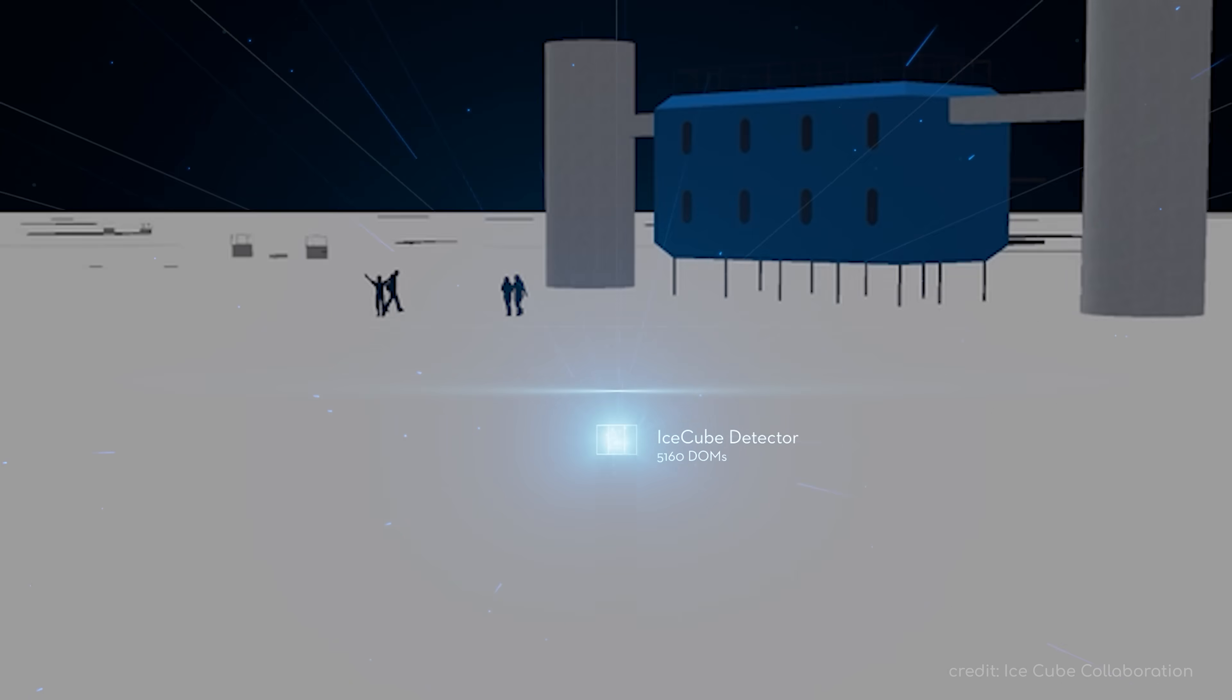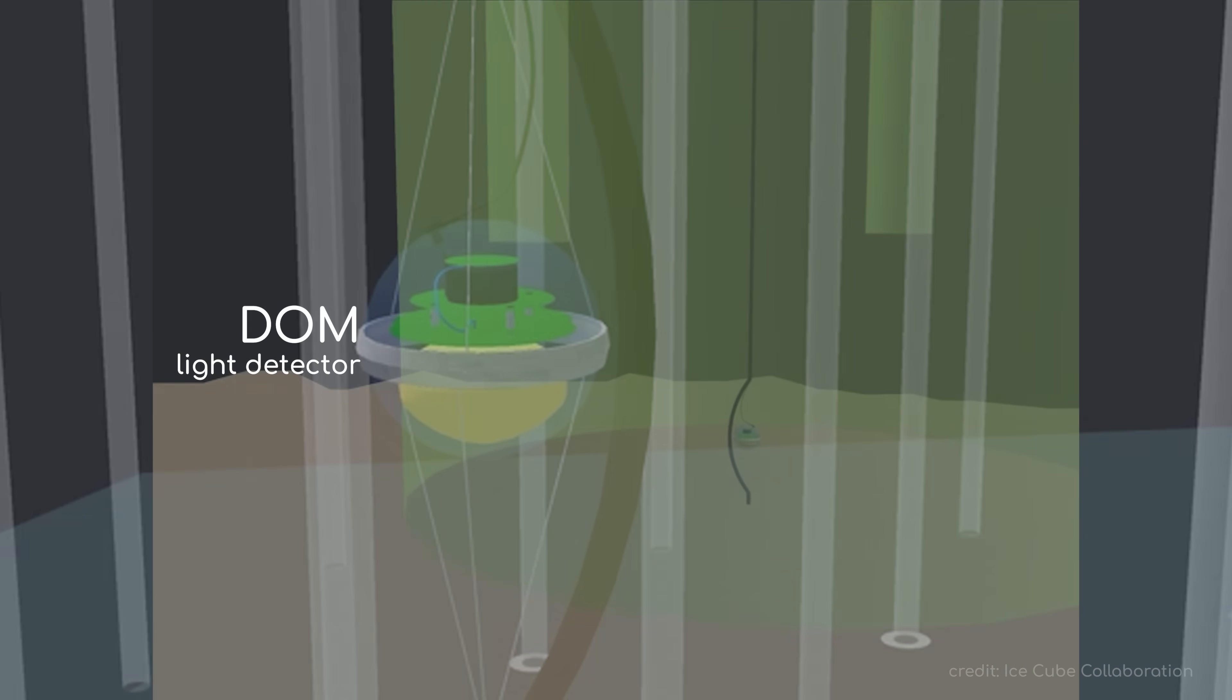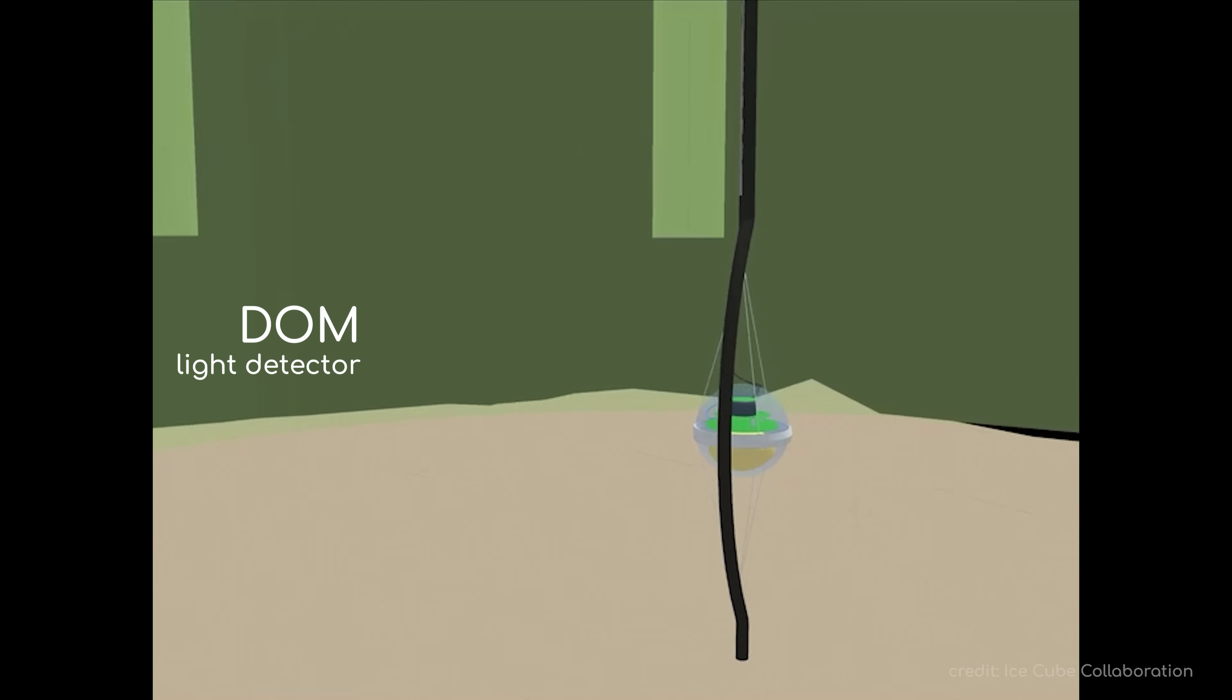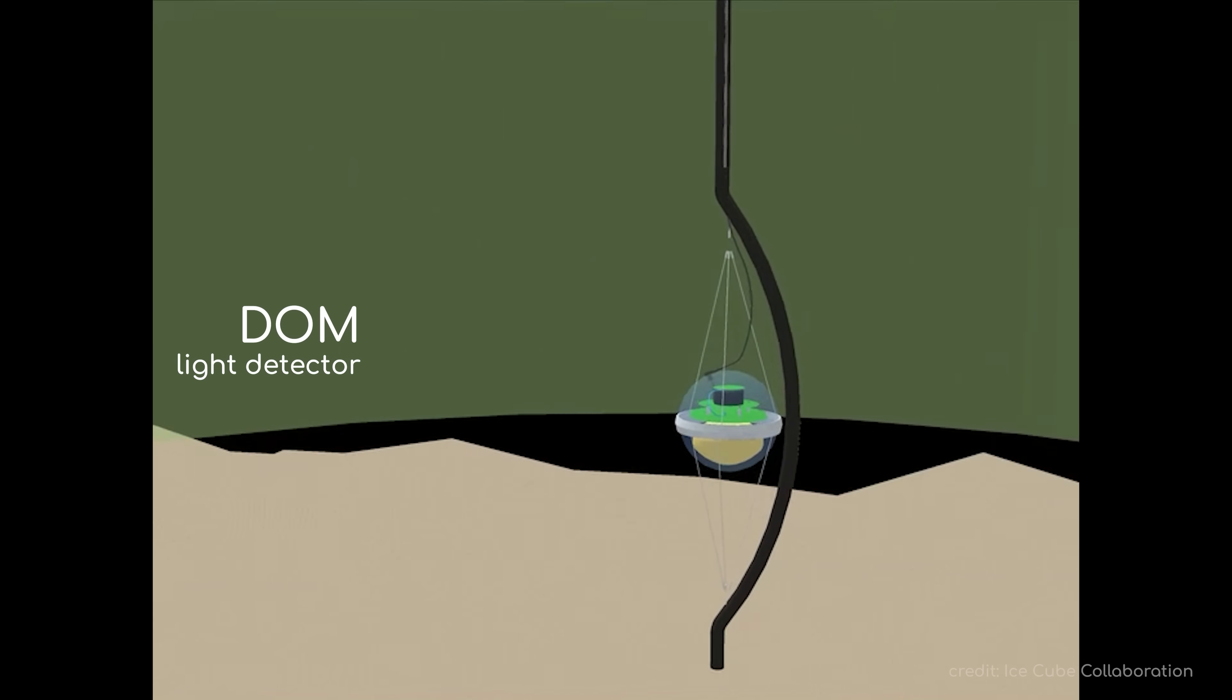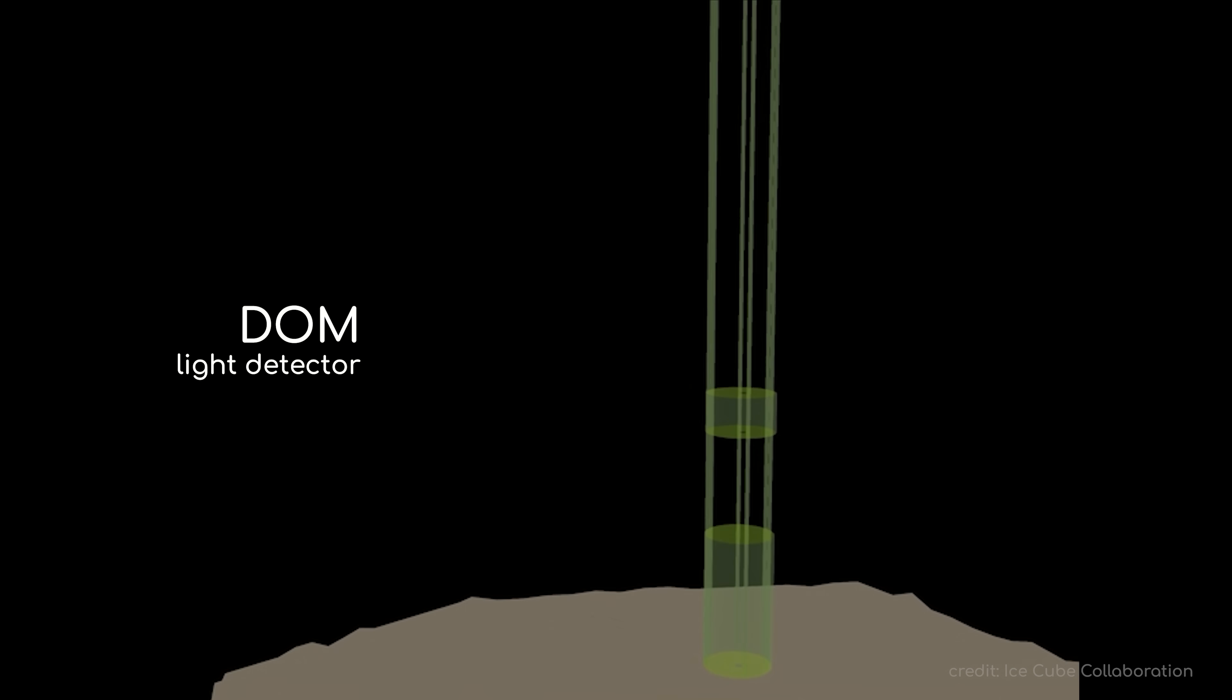They might seem strange, but the 5,160 detectors, or DOMs, suspended down between 1.5 and 2.5 km in the darkness of the ice shelf, are in fact light detectors. The Sun's rays have of course been completely swallowed up by the thousands of meters of compressed ice that lie above, but that doesn't mean there is no light at all down here.